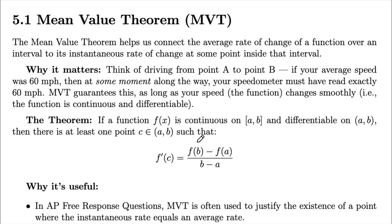Conceptually, this means that if you're driving from point A to point B and your average speed along the way was 60 miles per hour, then at some point in time you would have had to have been going exactly 60 miles per hour. That's basically what the MVT guarantees. The other thing of note with the MVT is the conditions — in order to apply it, you need to check that your function is continuous and differentiable.